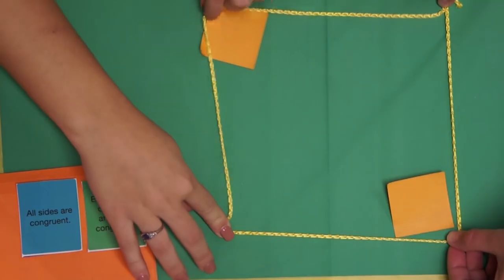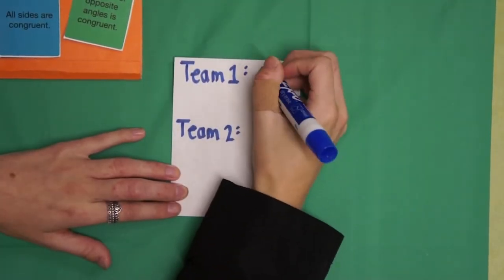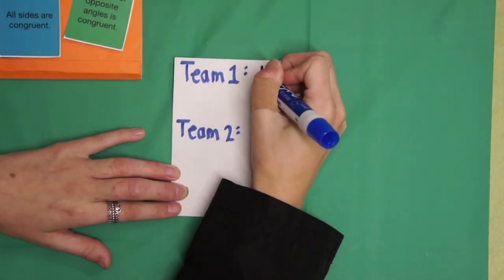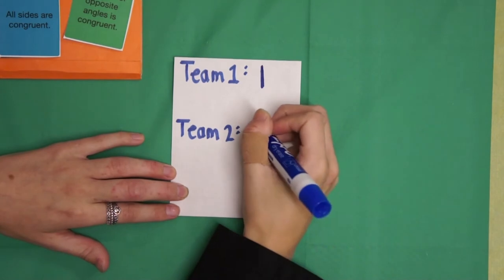When a pair has correctly justified a quadrilateral, they receive one point. In turn, each pair has the opportunity to earn a point for each new type of quadrilateral they can find that satisfies the property cards for the round, as long as no other group has already presented that type.